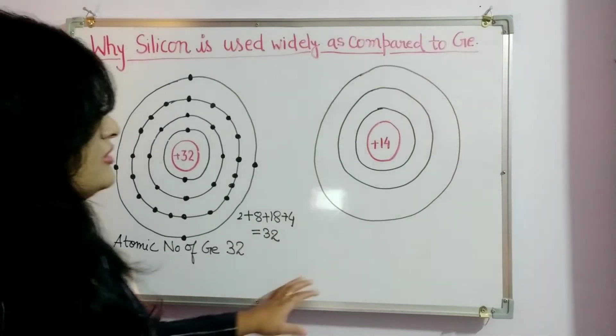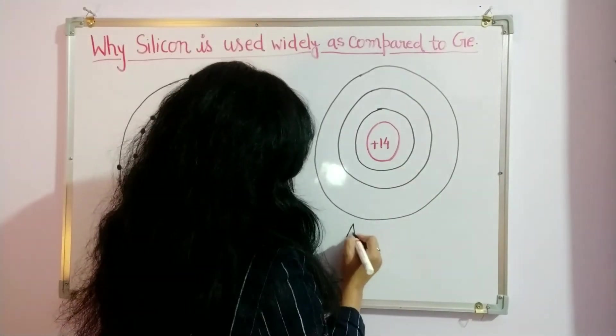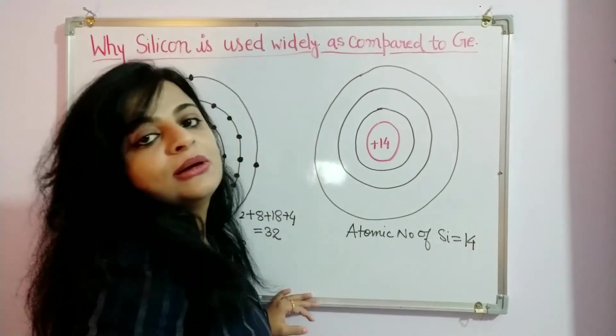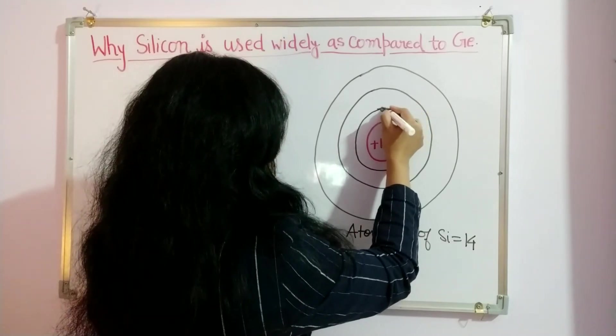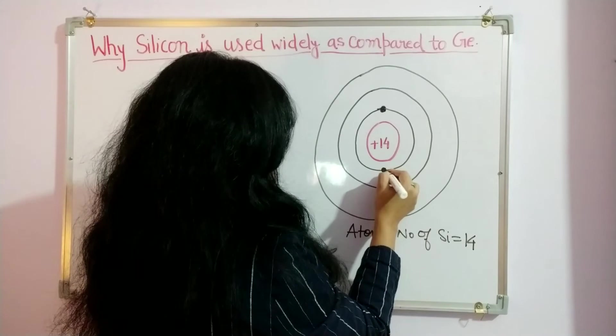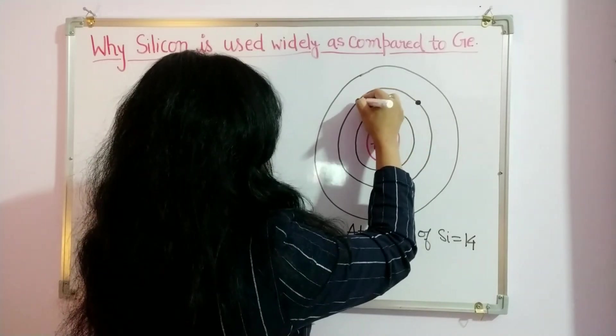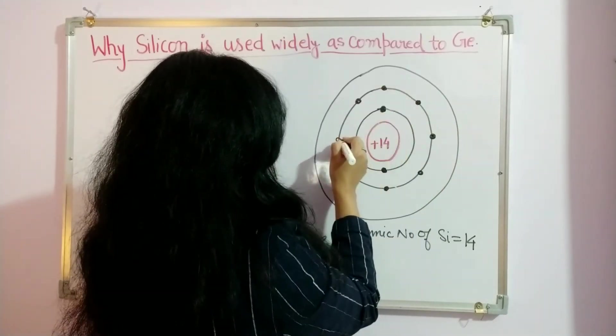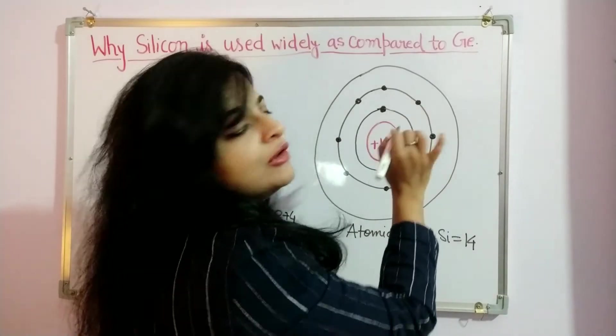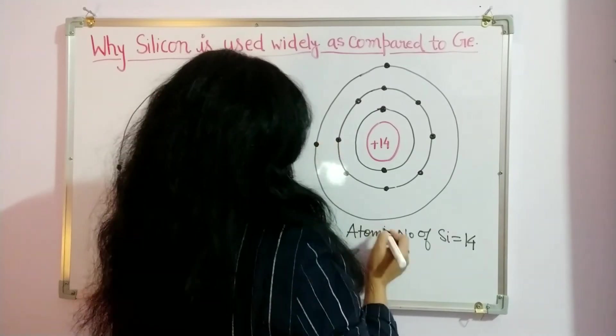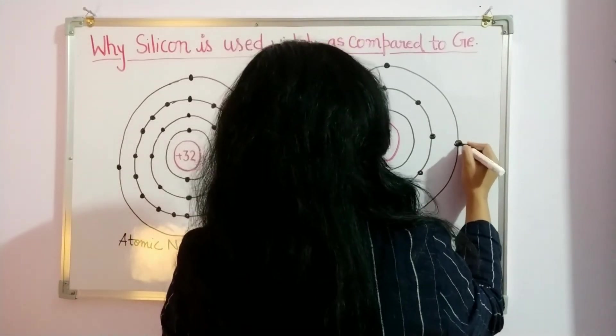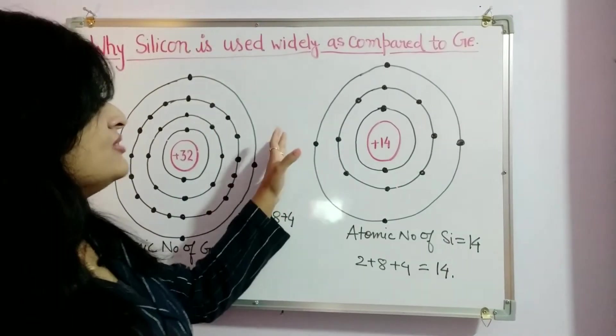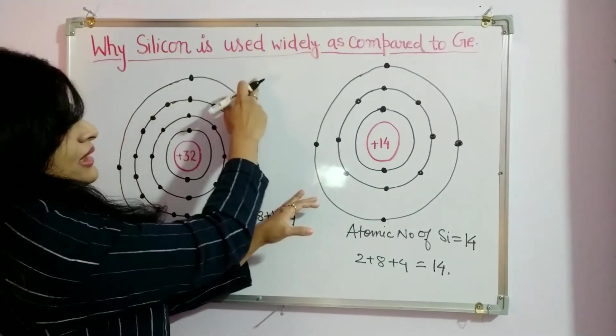Now similarly we will see the structure of silicon atom. Atomic number of silicon is 14. So the arrangement of the electrons around the nucleus is 2 in the first shell, then 1, 2, 3, 4, 5, 6, 7, and 8 in the second shell, and in the outermost shell we will have 4 electrons. So 2 plus 8 plus 4 equals 14.